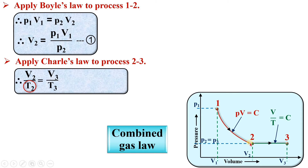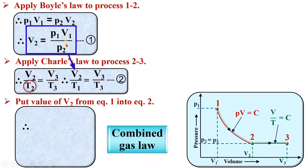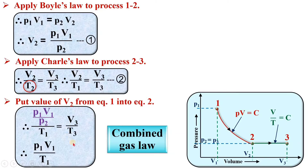Now, T2 is equal to T1 because this is the constant temperature process. So I can say V2 by T1 is equal to V3 by T3. Let us say this is equation number 2. Now put the value of V2 from equation number 1 into equation number 2. So you can say P1V1 upon P2, divided by T1, is equal to V3 by T3. Rearranging, P1V1 upon T1 is equal to P2V3 upon T3.